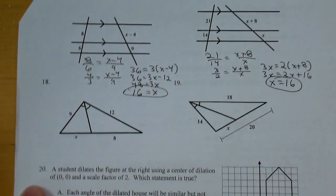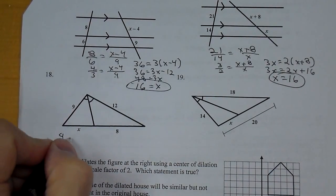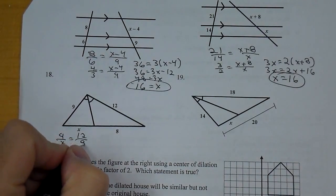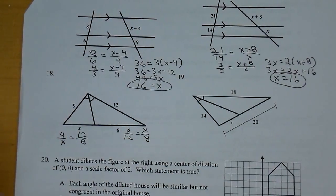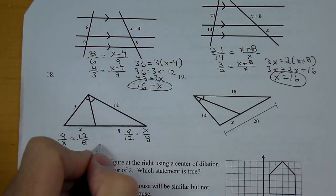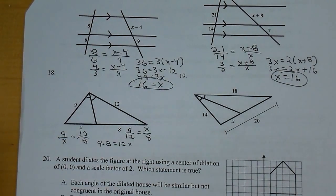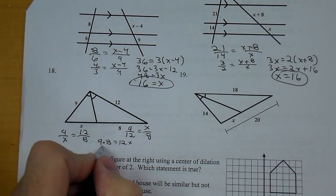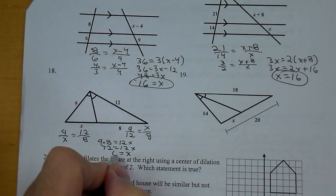Also, for number 18, I'm going to stack these and go 9 over X equals 12 over 8. You could have also done 9 over 12 equals X over 8. It's really how you want to set it up. In either case, though, they come out to be 9 times 8 equals 12X. As long as you get to that cross product, you're in good shape. That's 72 equals 12X, and X comes out to be 6.